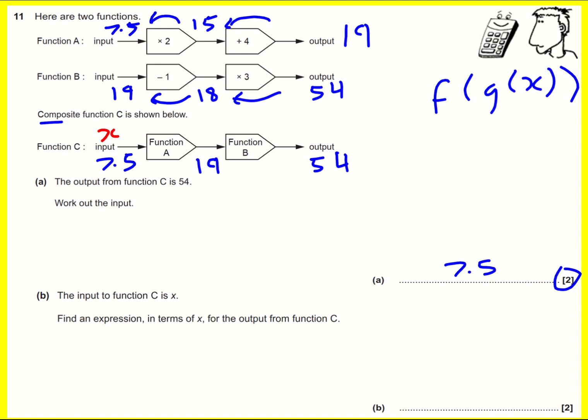So if I put it into function A, then here I'm going to get 2x. And then here I'm going to get 2x plus 4. This is all my working up here.